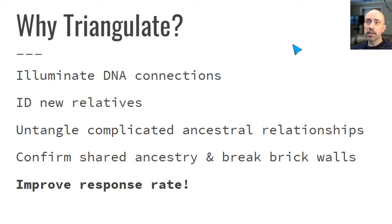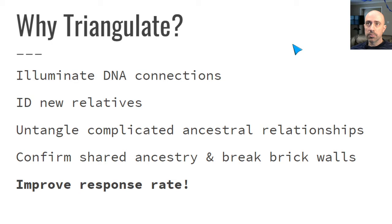Why do we triangulate? We triangulate to eliminate DNA connections, to identify relatives, to untangle ancestral relationships. I've heard some people indicate that they can't triangulate because it's just a mess. To the contrary, triangulation really cleans up the messes. If there's a problem with triangulation in the setting of tangled up ancestral relationships, we just need to take a closer look and see how triangulation can actually help. Ultimately, we're hoping to confirm relationships and break down brick walls, and I'll provide some examples.